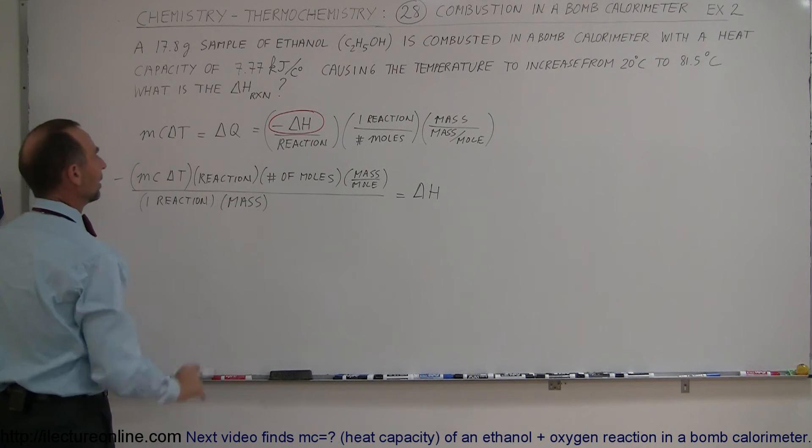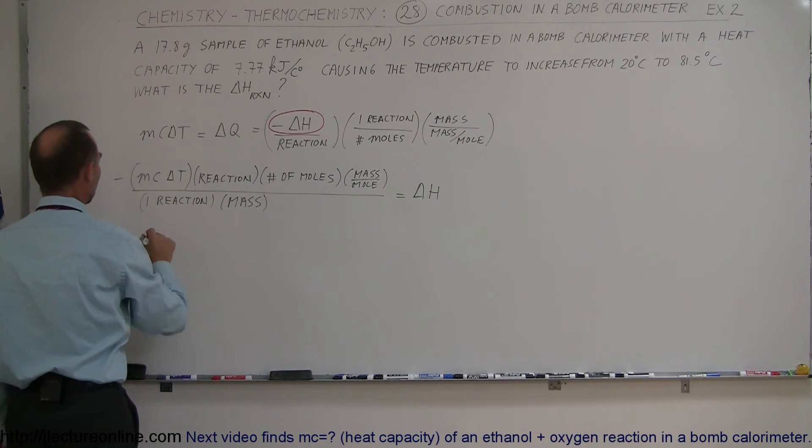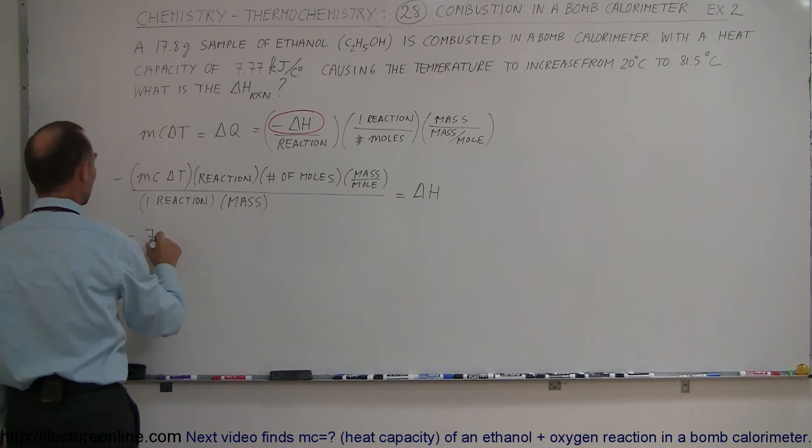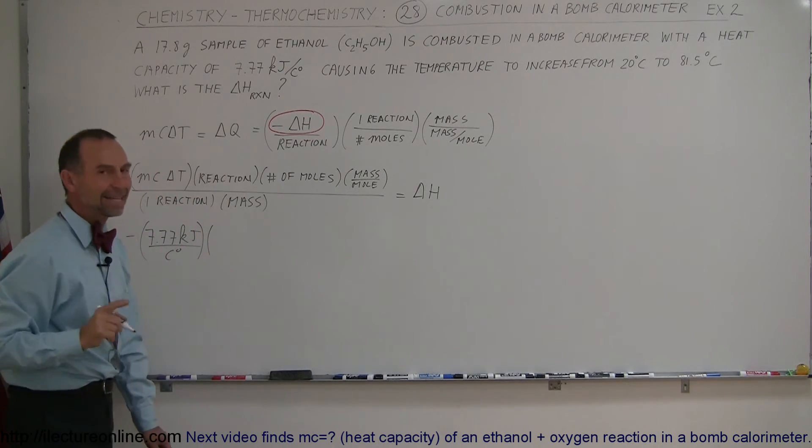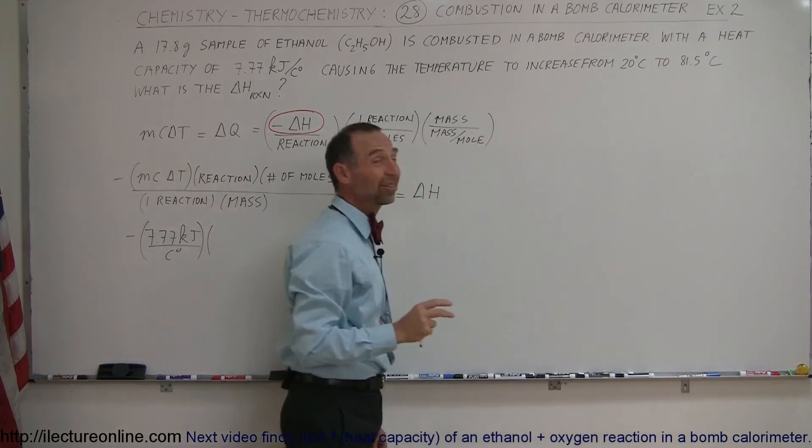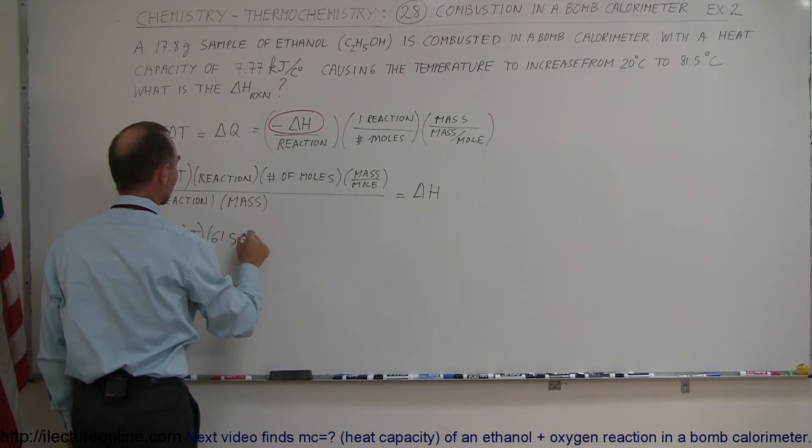Now all we have to do is plug in everything in this equation. The MC is the heat capacity, that is negative 7.77 kilojoules per centigrade degree. Multiply times the delta T, the change in the temperature. We went from 20 to 81.5, so that's a change of 61.5 centigrade degrees.